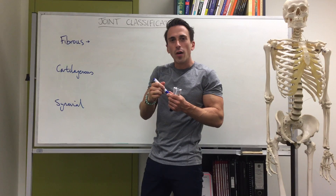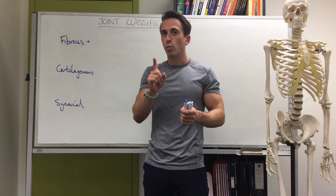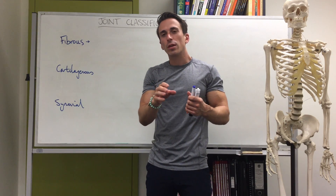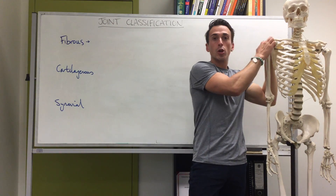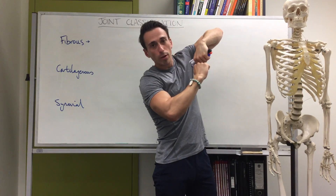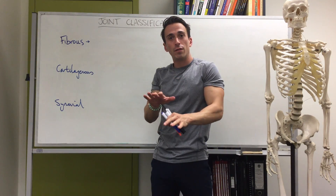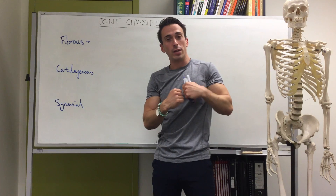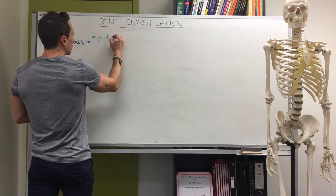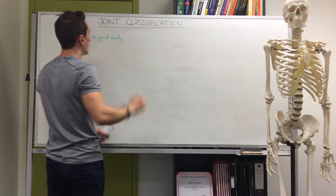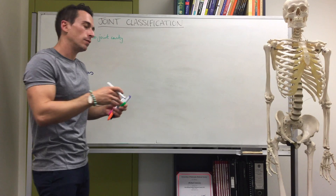Fibrous joints are joints in which there is no joint cavity. A joint cavity is what you find in synovial joints — like the knee or hip — where two bones articulate and there's a little cavity with fluid inside. Fibrous joints do not have that joint cavity, and the bones are connected together through dense regular connective tissue.